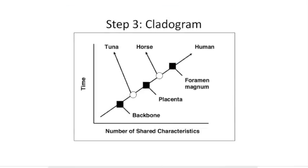Here is a picture of a cladogram with three organisms: a tuna, a horse, and a human. Along the side of the tree are characteristics that some organisms share and some don't. Starting at the base of the trunk and going up, the first characteristic is a backbone, meaning everything that comes after that point — the tuna, horse, and human — all have a backbone.